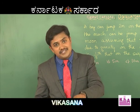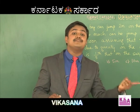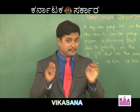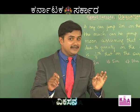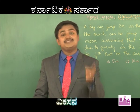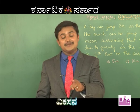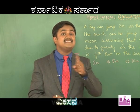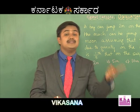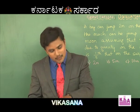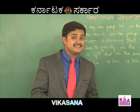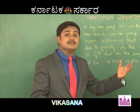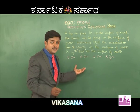That maximum potential energy remains the same irrespective of the surface. However, the value of g is different on different surfaces. The maximum potential energy stored by the body is the same on the surface of the moon as well as on the surface of earth. That's the method to solve this.